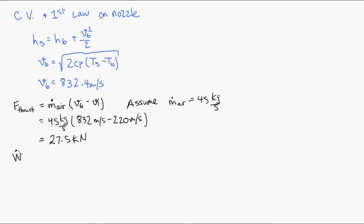And then we get about 27.5 kilonewtons of thrust. To get the propulsive power we multiply the thrust by the velocity of the aircraft. And we get the propulsive power is about 6 megawatts.